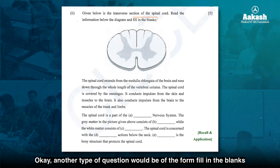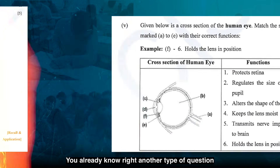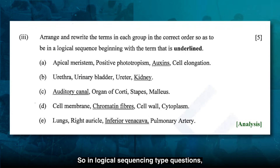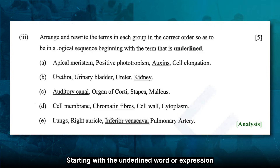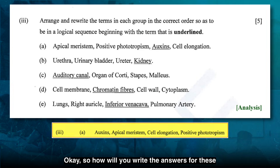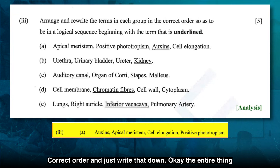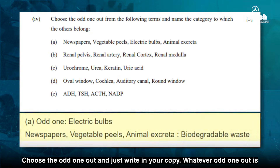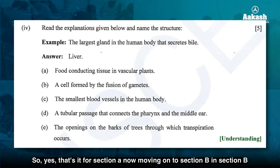Another question type in biology section A is fill in the blanks, which will always be paragraph-based. You also may get 'match these structures,' similar to match the following — answered the same way. Another type is logical sequencing, where you arrange words or expressions in the correct order starting with the underlined word — just rearrange and write it down completely. You may also get an 'odd one out' question where you choose the odd one and name the category to which the others belong, or a 'name the structure' type question.